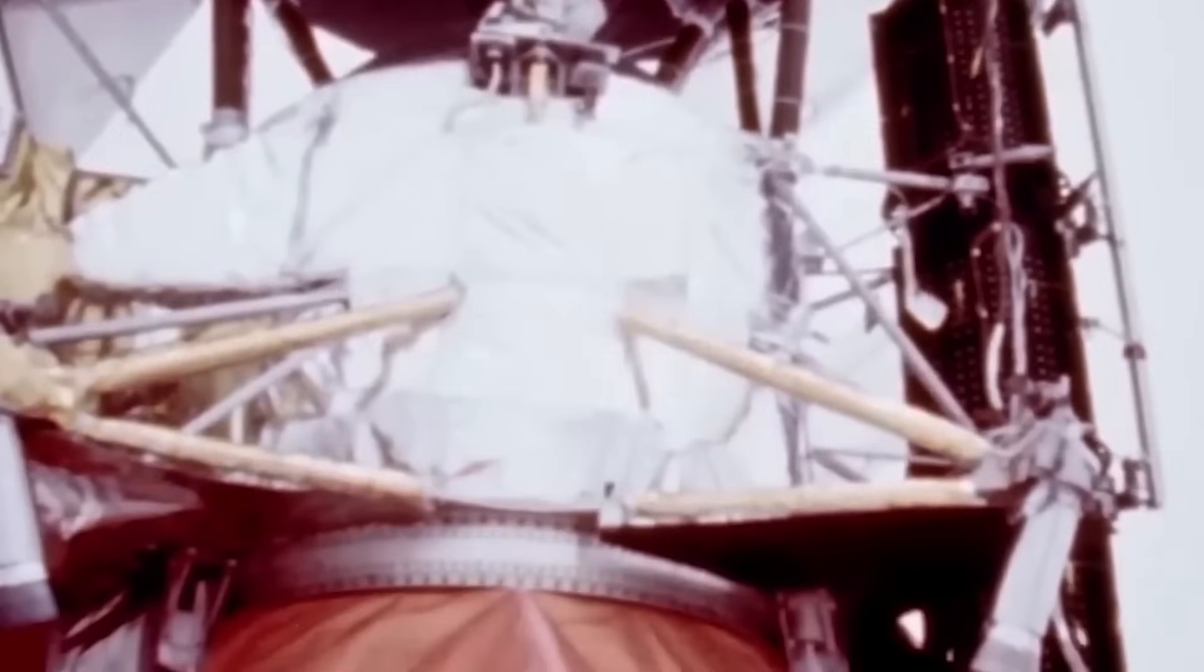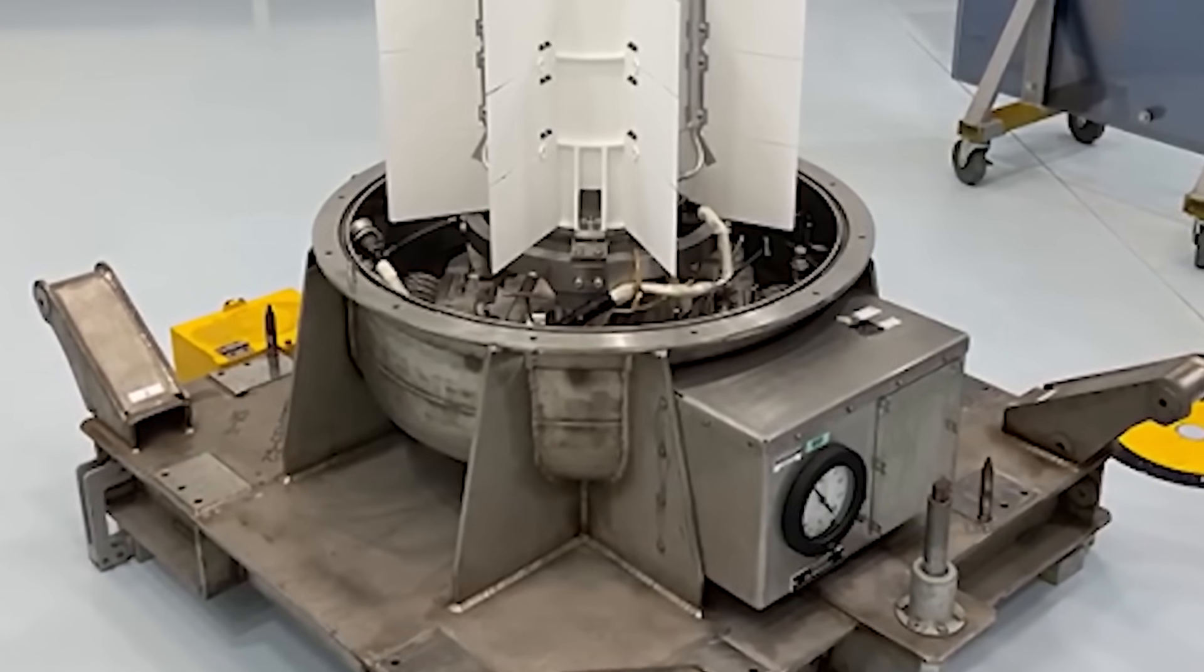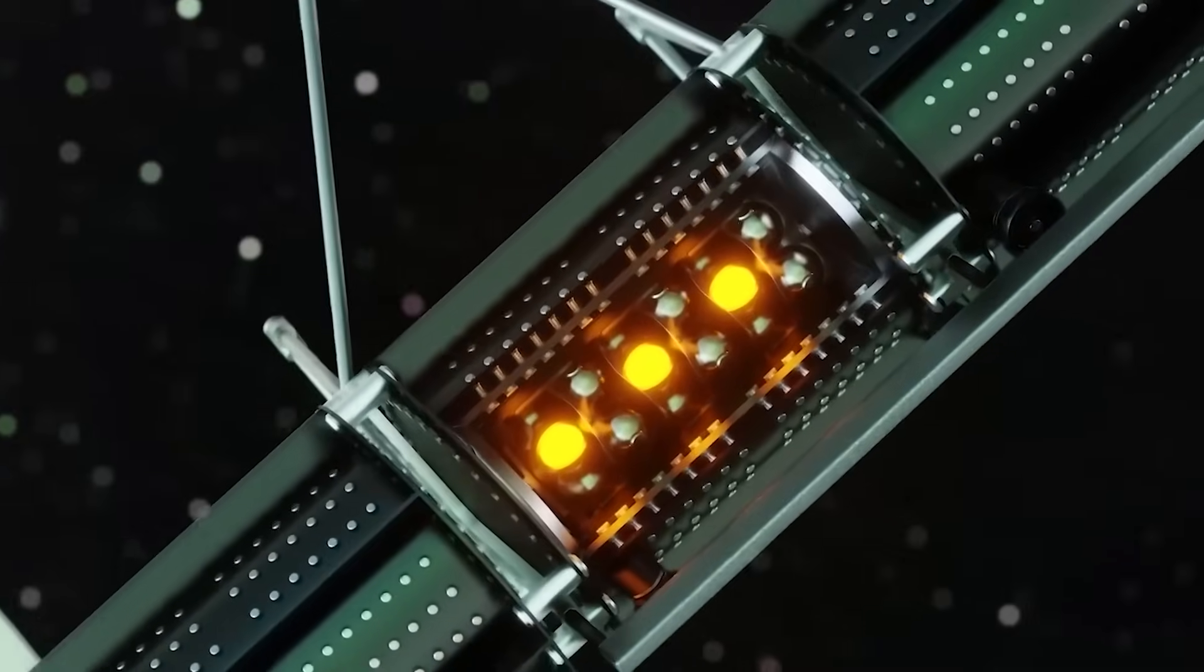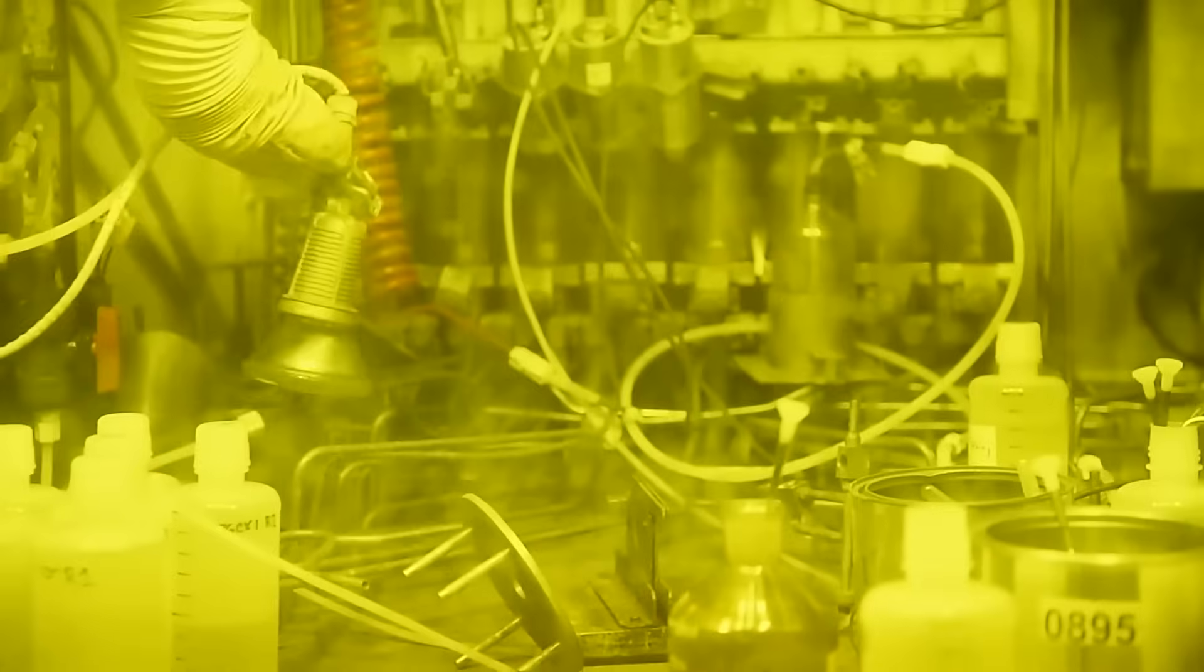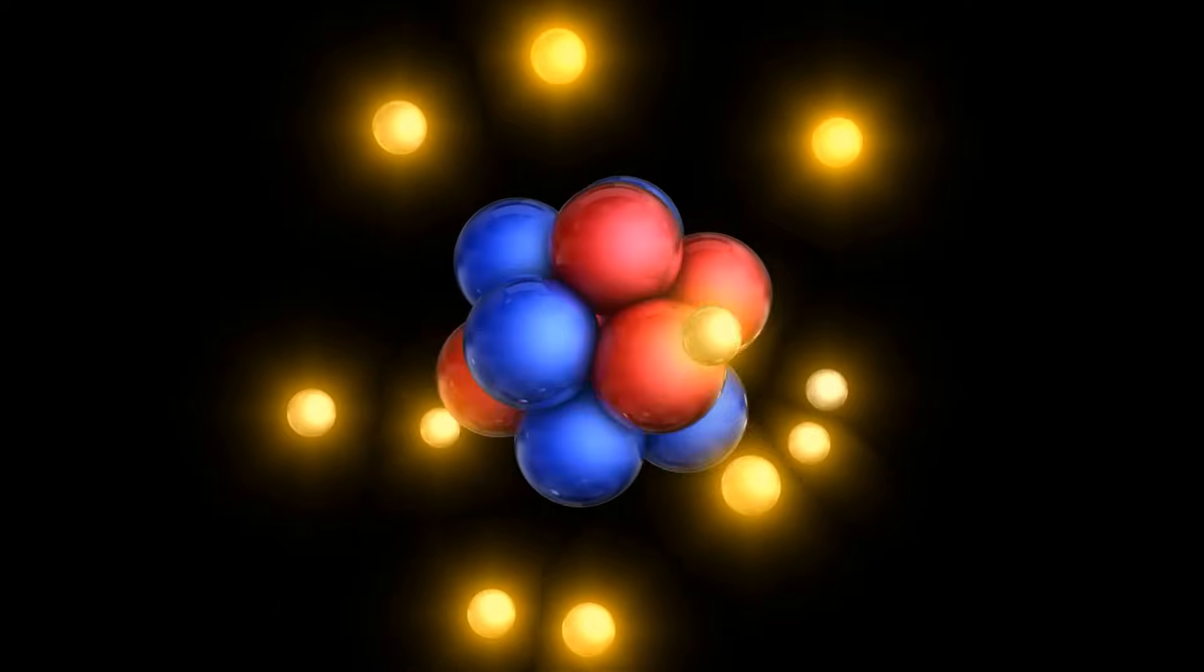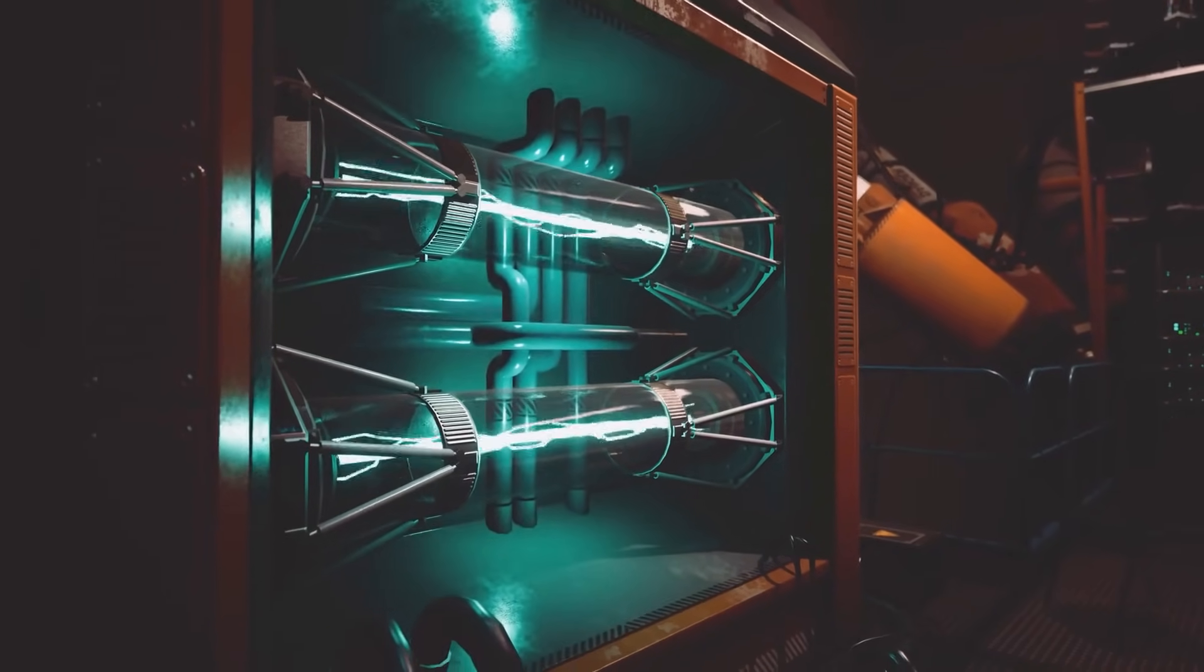The beating heart of Voyager 1 lies in its radioisotope thermoelectric generator, RTG. This device harnesses the decay of a radioactive isotope called plutonium-238 to generate electricity. Plutonium-238 is not easily obtained, but it is produced in special nuclear reactors through a complex process that involves irradiating another isotope called neptunium-237, which undergoes subsequent radioactive decay, transforming into the precious plutonium-238. Picture this, a stack of thermocouples ingeniously arranged inside the RTG. These thermocouples, composed of different materials, generate a temperature gradient when exposed to the heat derived from the decay of plutonium-238.